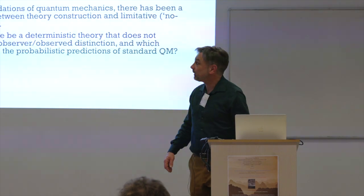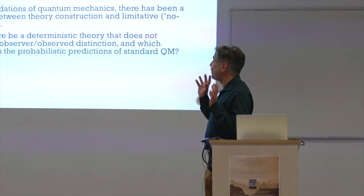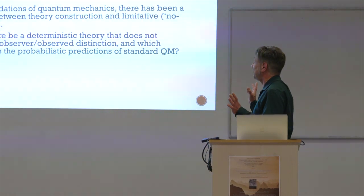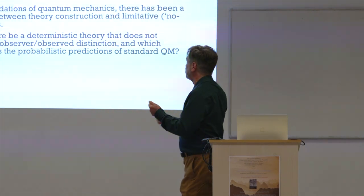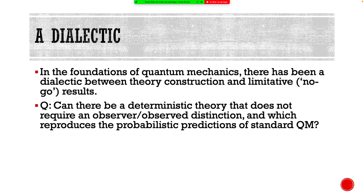But so if we ask the question, can there be a deterministic theory that does not require us to divide the world between observer and observed and does reproduce the probabilistic predictions of quantum mechanics? If the question is, is that possible? We know the answer to that. The answer is yes.